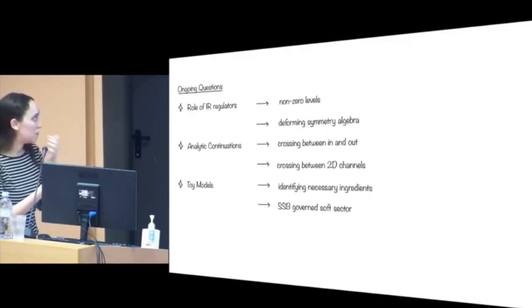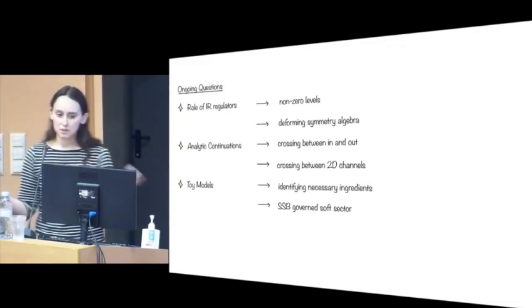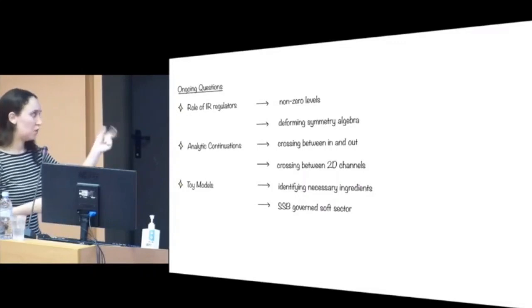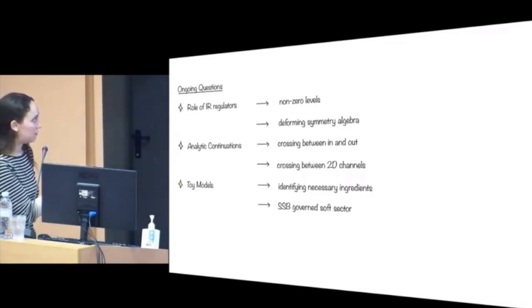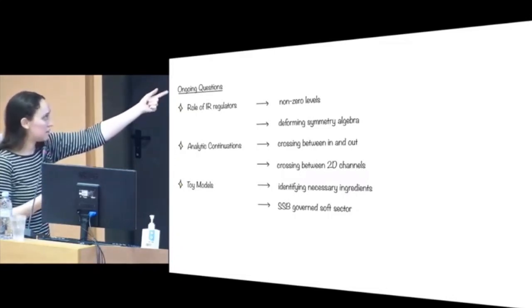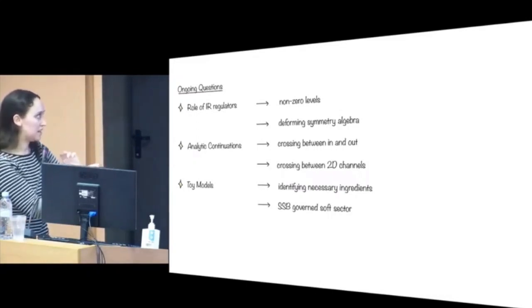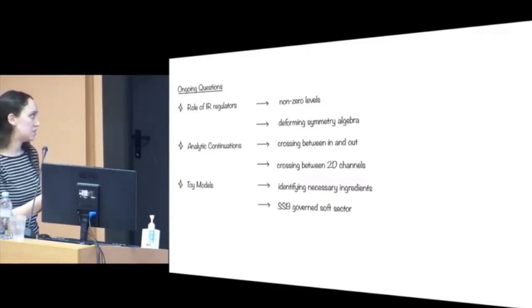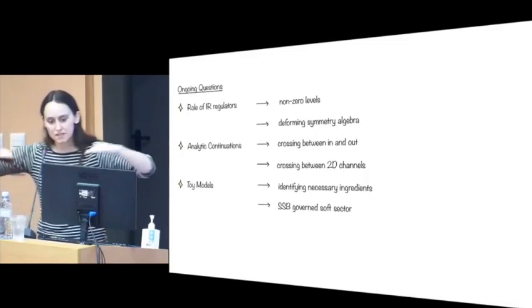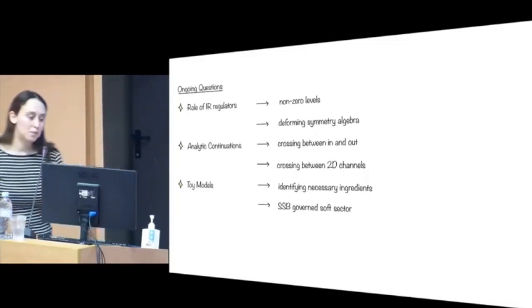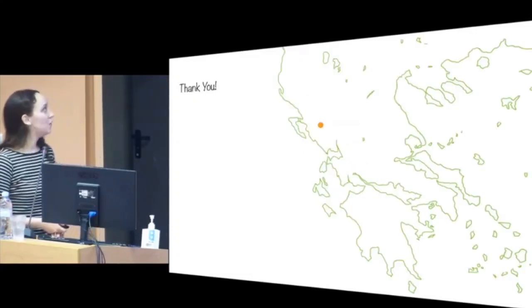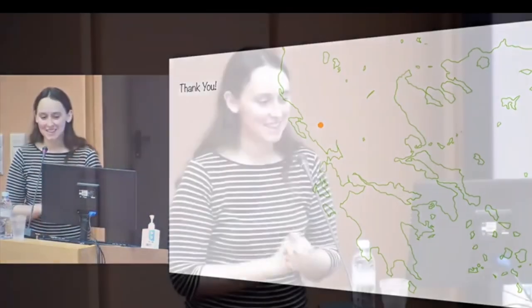So the main question that I've played with recently is the role of IR regulators. If you want to have a nonzero level for your central extensions, you need to somehow include either loop effects that introduce an IR regulator or deform the symmetry algebra. Similarly, we want to understand crossing both in the 2D conformal block sense as well as in and out sense. And then finally building up toy models where we basically have a set of necessary ingredients for celestial CFT. And thank you guys so much for letting me do my little pitch for the thing I've been working on.